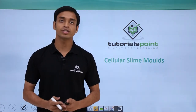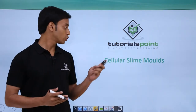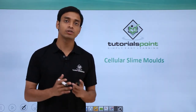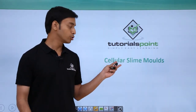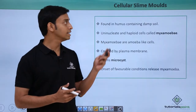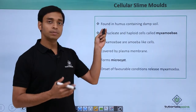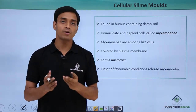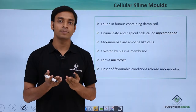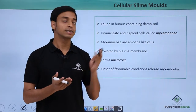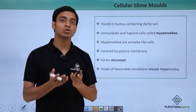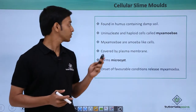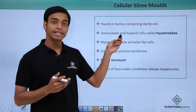Welcome to Tutorials Point. In this video we are going to talk about the cellular slime molds. Previously we have talked about the acellular slime molds. Cellular slime molds are mostly found in humus-containing damp soils, specifically in the upper layer of the soil. These cellular slime molds are mostly uninucleate and haploid cells.